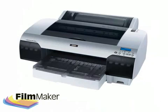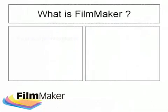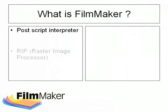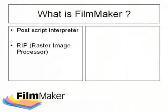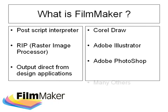So what exactly is Filmmaker and how does it work? Filmmaker is a PostScript interpreter known as a RIP, or Raster Image Processor to give it its full title. Filmmaker allows the output of high quality film separations from the industry's leading design applications such as CorelDRAW, Adobe Illustrator and Photoshop, as well as many more.